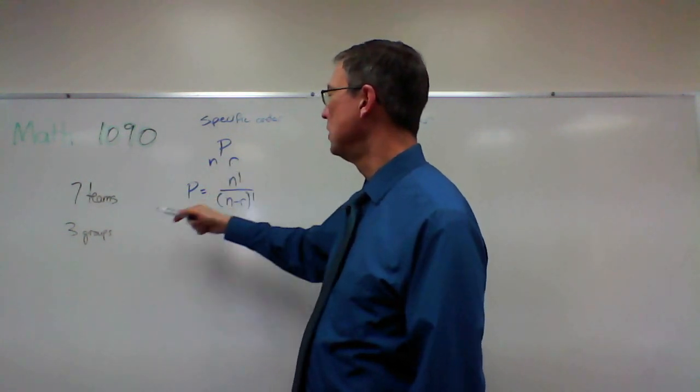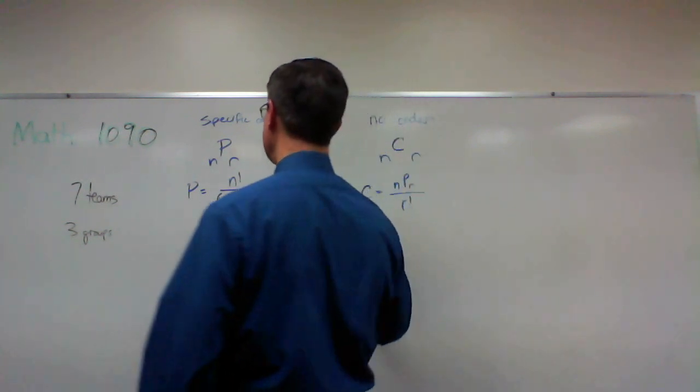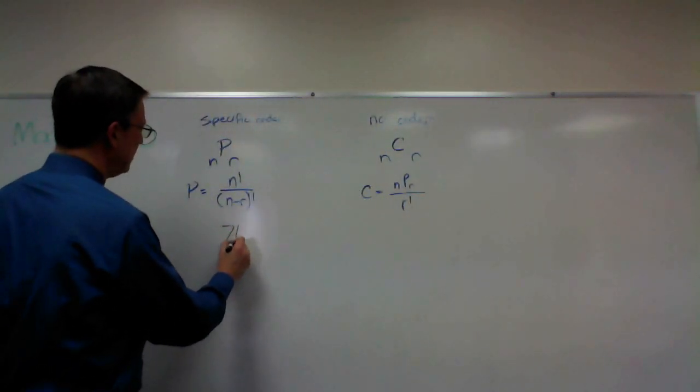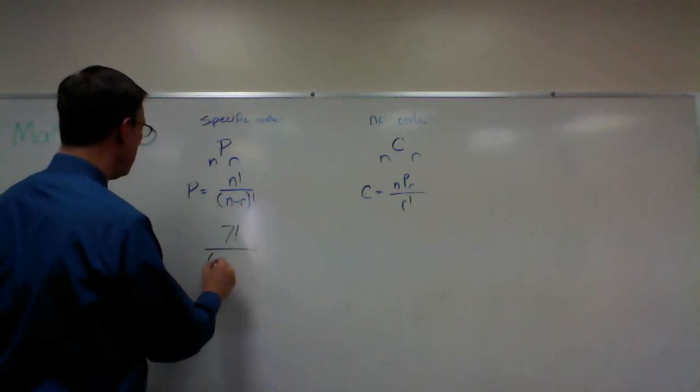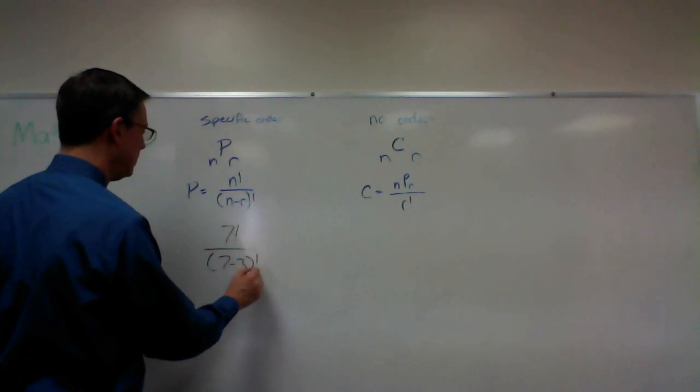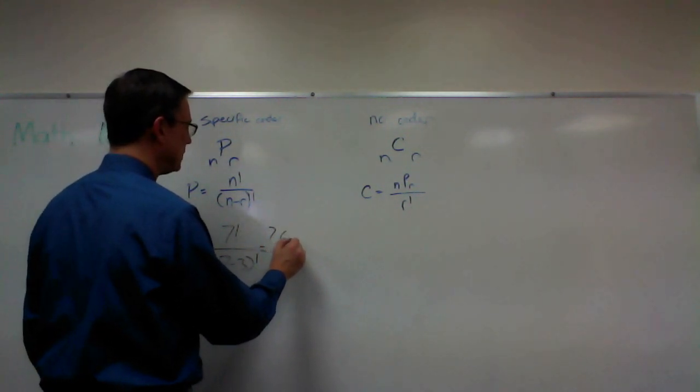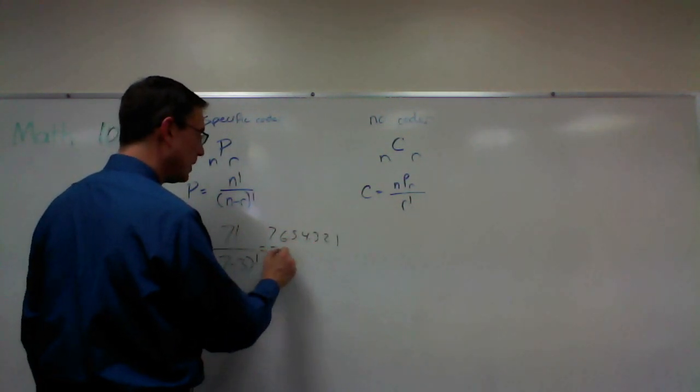Let's start by saying seven is the number of teams, so that would be the n, and then r is the number of groups possible. So if we're doing a permutation, we're going to do 7 factorial over n minus 3 factorial. If I solve that, I get 7 times 6 times 5 times 4 times 3 times 2 times 1.